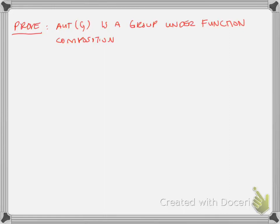I wanted to go back over this proof to provide a little more clarity than what I did in class. Note that we're proving that the automorphism of G is a group under function composition — that was established earlier in the notes. The book just says 'prove it's a group,' but it's under function composition, which is why we use the approach we used in class.